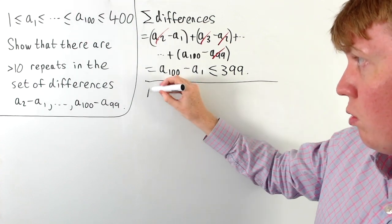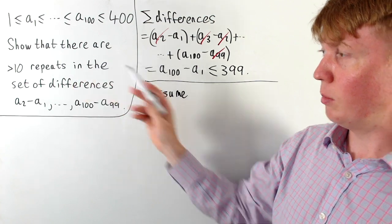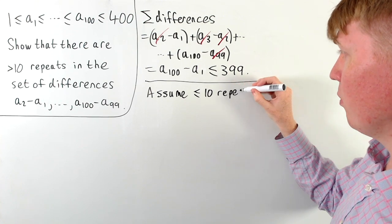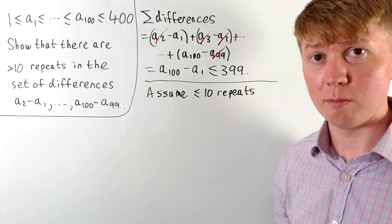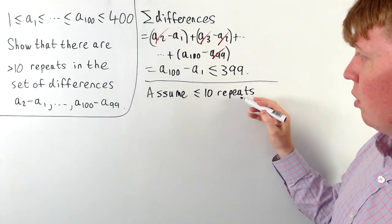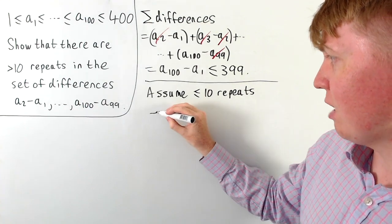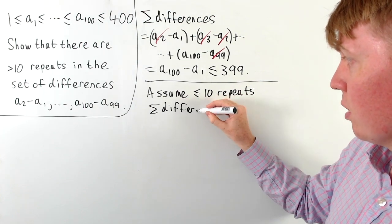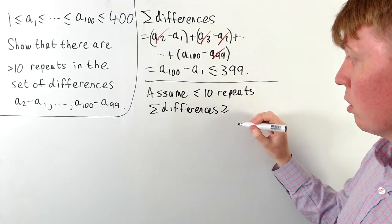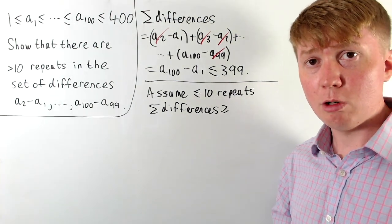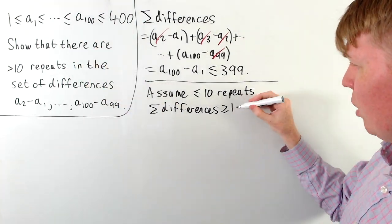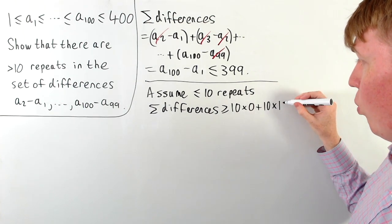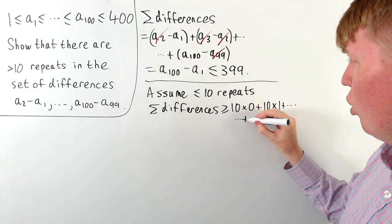The next step is to assume for a contradiction that any difference repeats at most 10 times. We'll think about the implications for the sum of differences — we already have an upper bound, so now we get a lower bound by making the sum as small as possible. We're allowed 10 lots of 0, then 10 lots of 1, and so on, up to 10 lots of 8.